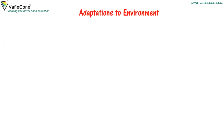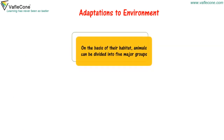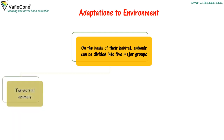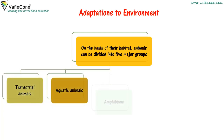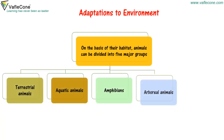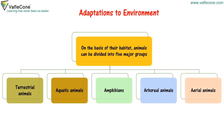Adaptations to Environment: On the basis of their habitat, animals can be divided into five major groups — Terrestrial Animals, Aquatic Animals, Amphibians, Arboreal Animals, and Aerial Animals.